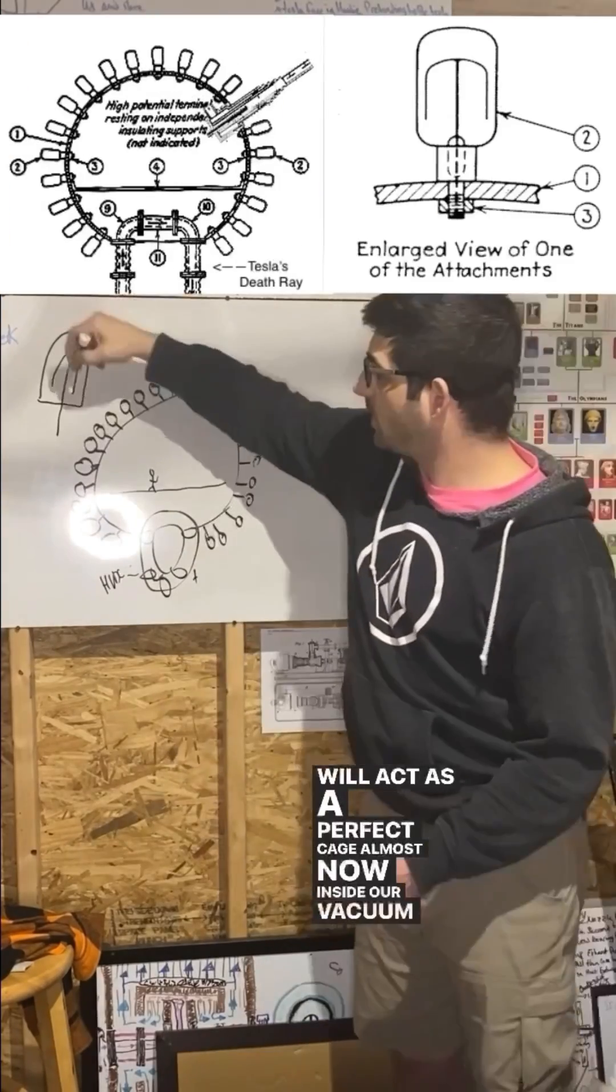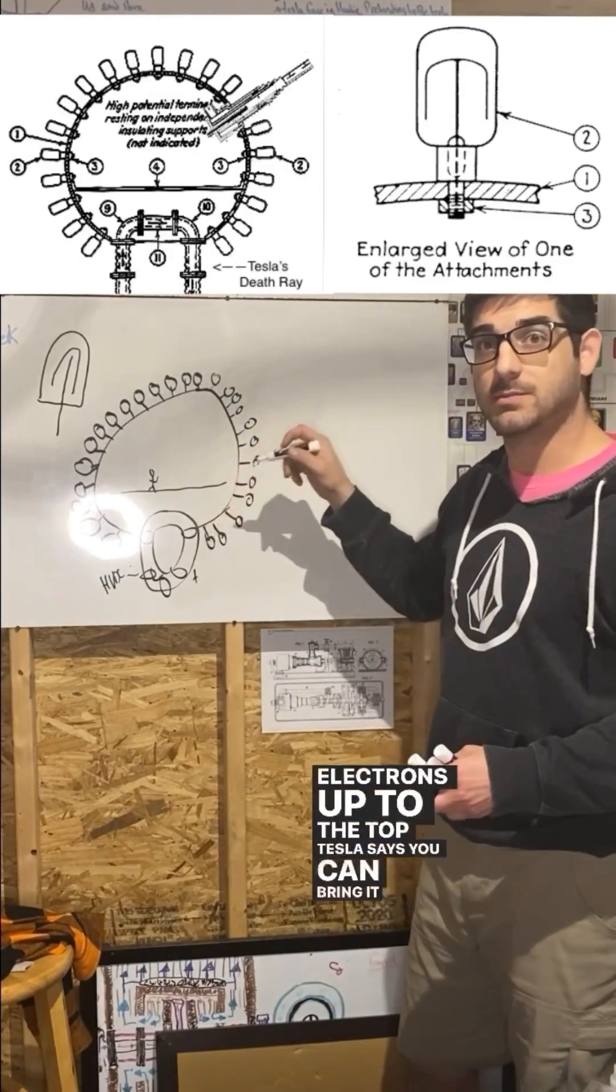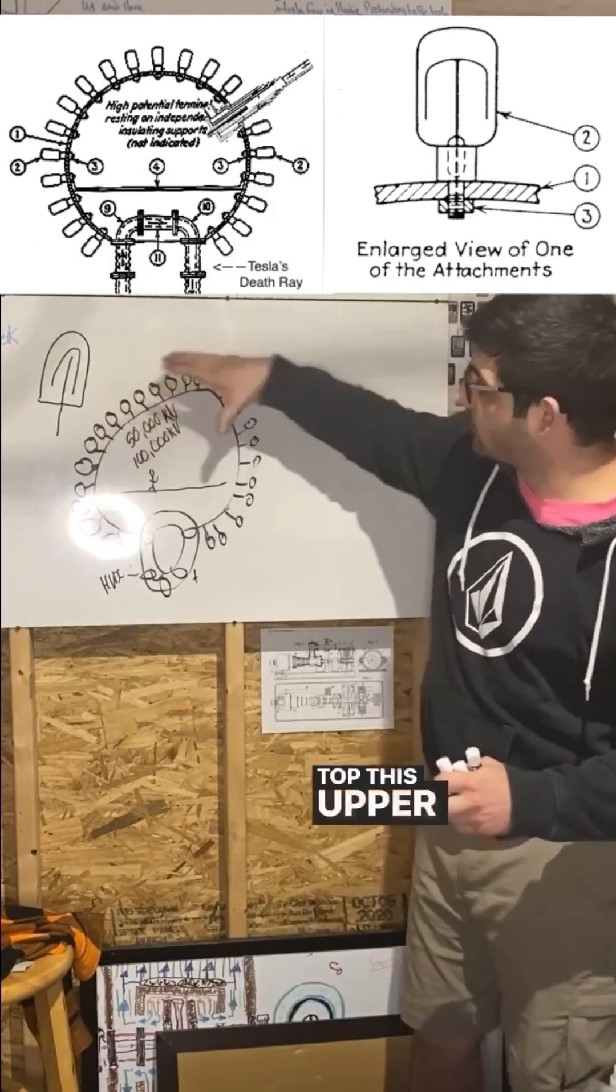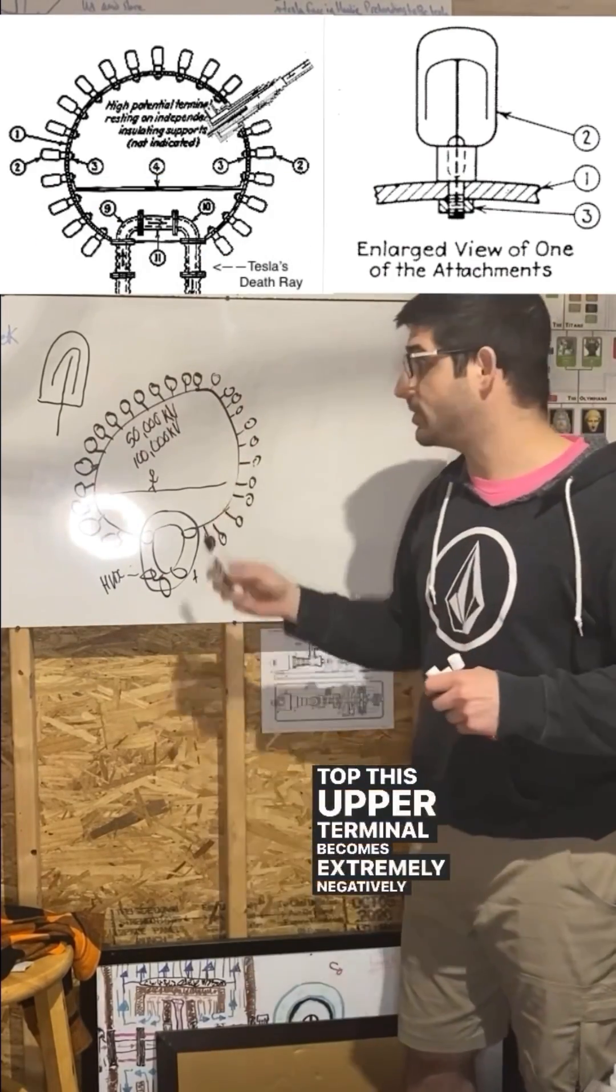There are vacuum bulbs all over the upper terminal. Tesla says you can bring it up to 50 to 100 million volts - that's a lot. So essentially, this upper terminal becomes extremely negatively charged.